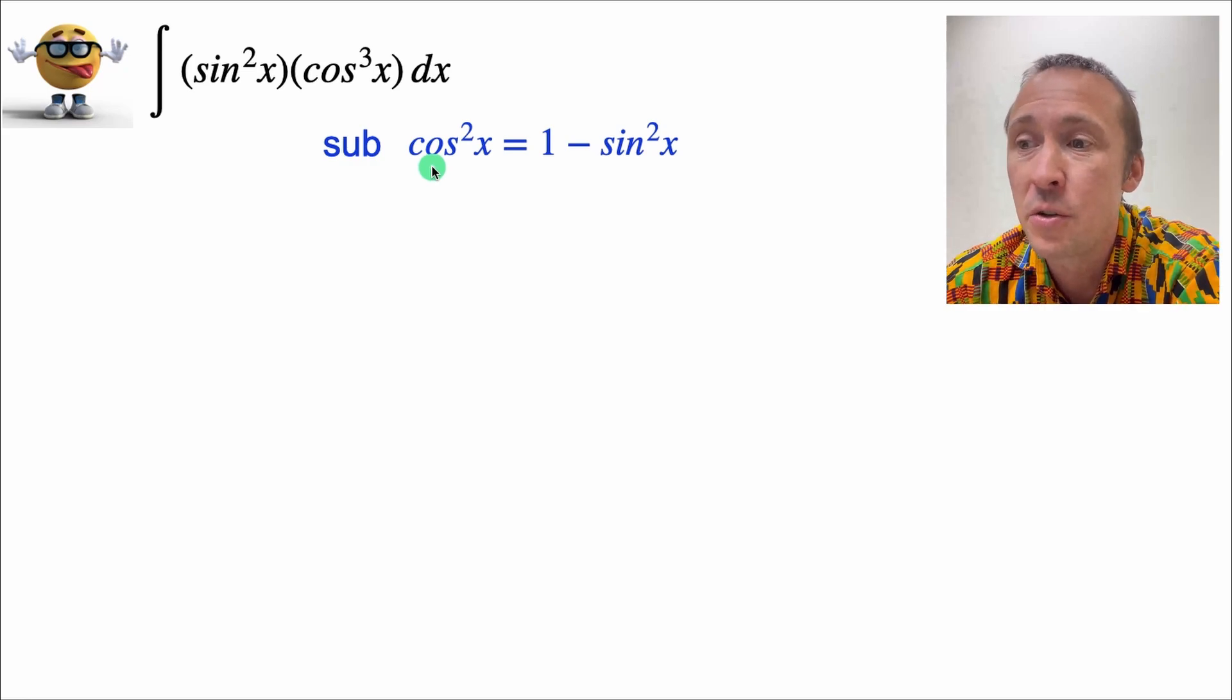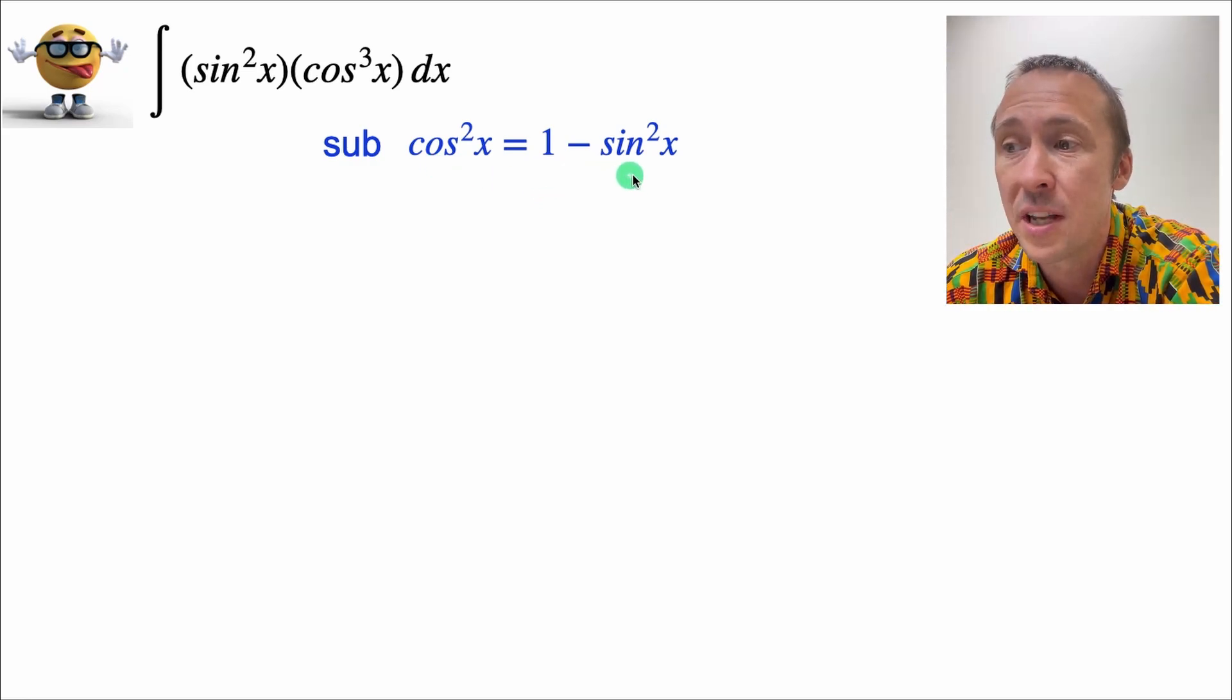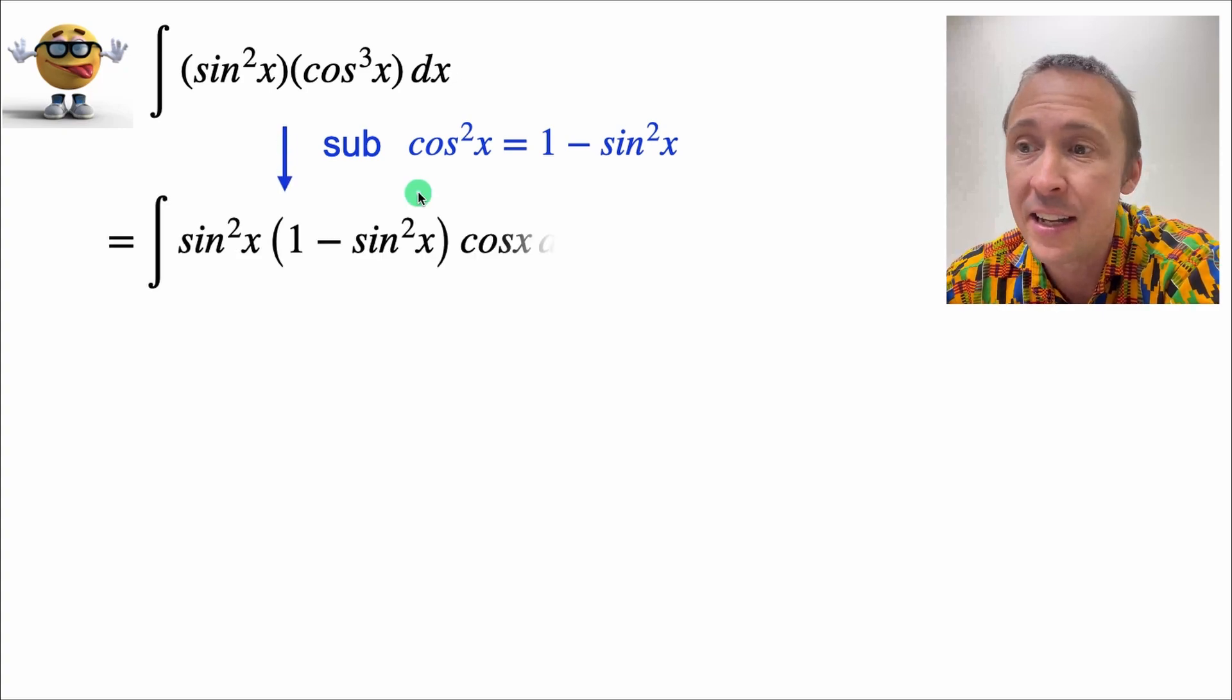So if we substitute cos squared equals 1 minus sin squared x using a trig identity, it gives us this.